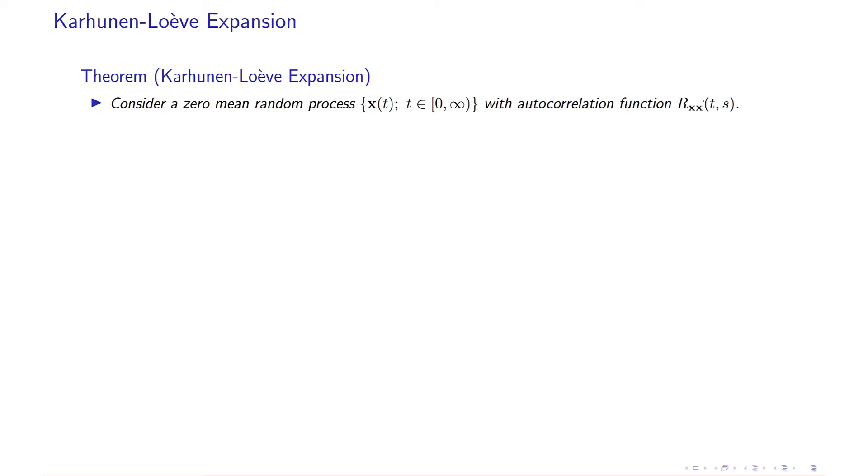It says that if you have a zero mean random process with autocorrelation function, it doesn't need to be stationary, then it could be expanded in mean square sense into some components.